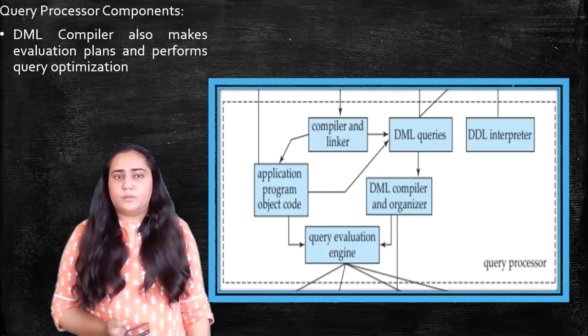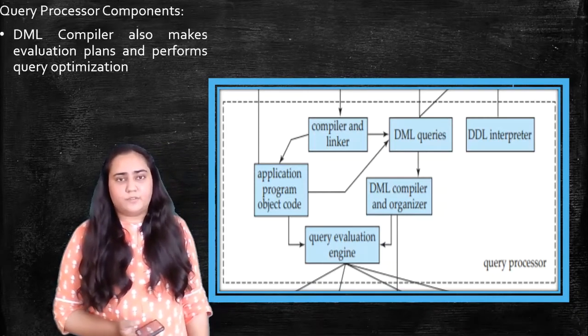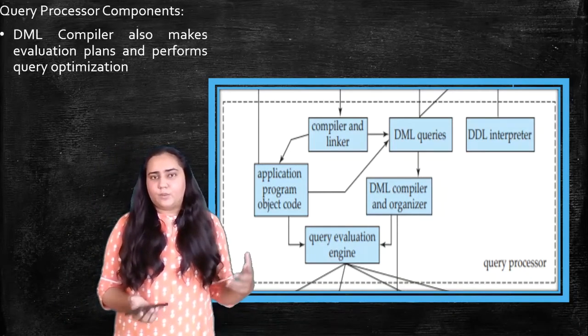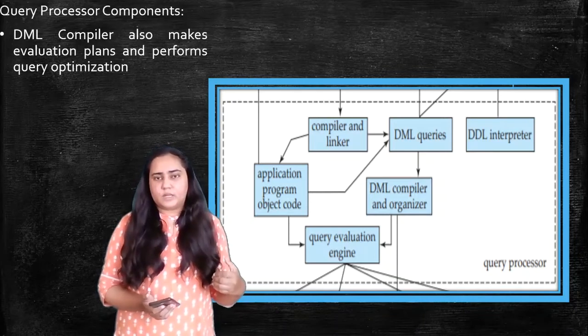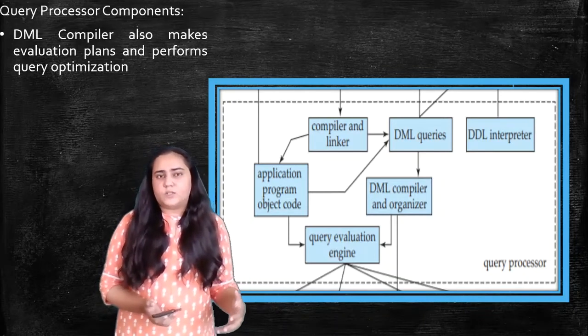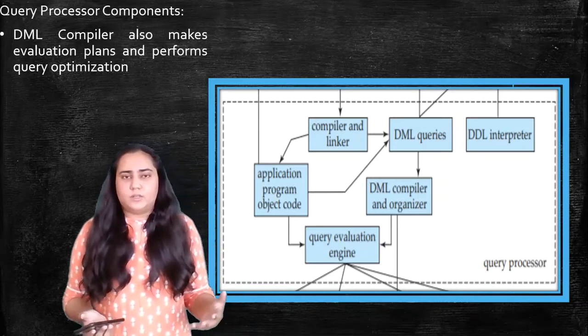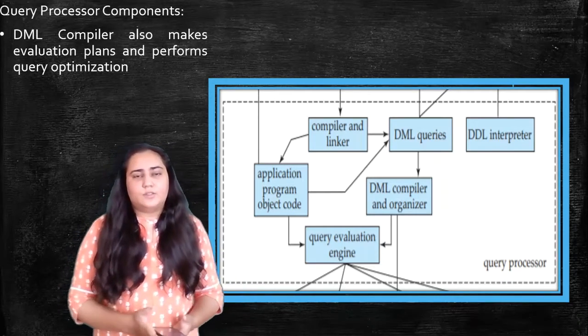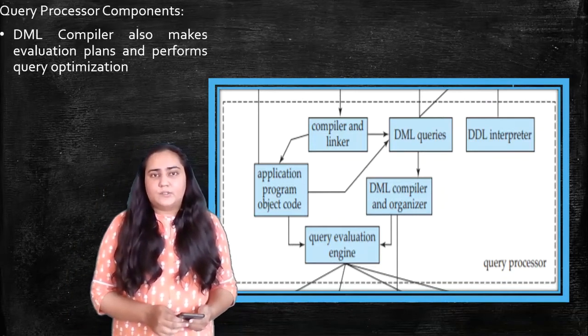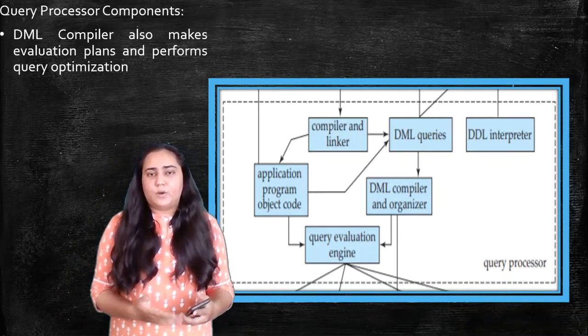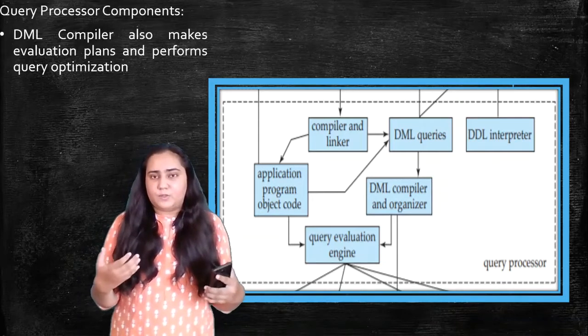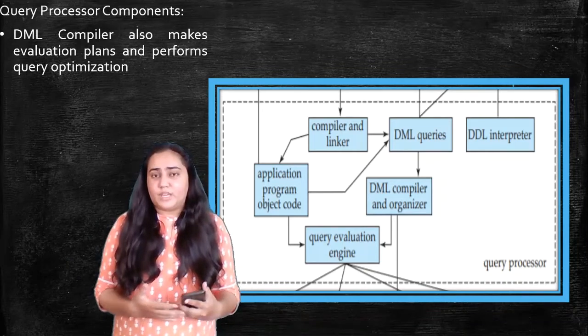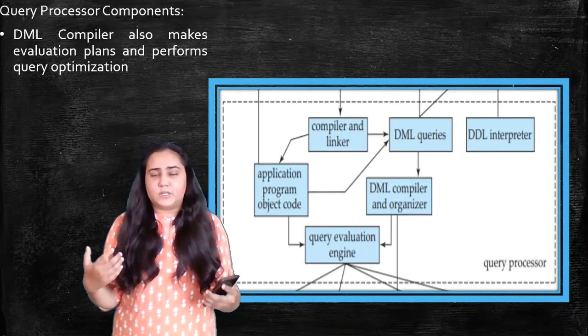DML compiler also makes evaluation plans and performs query optimization. So in database language, whenever there's a code coming from outside into the database, we call it a query. Because it's known as a question that you want to ask to the database and you get an answer. So that's why it's known as a query. And so the DML compiler also creates evaluation plans about how to actually implement that query and how to make it more efficient.